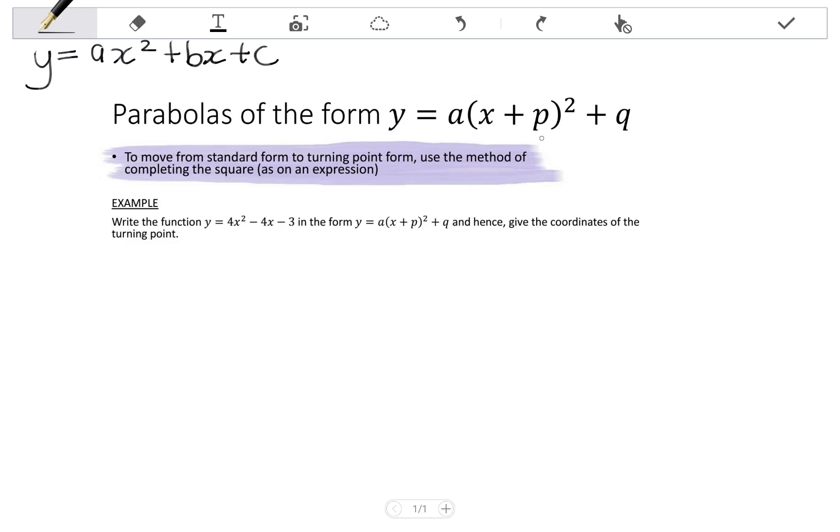To be able to take an equation written in standard form and write it in turning point form, we use the method of completing the square as on an expression. I say as on an expression as opposed to as on an equation because we have to keep the left-hand side y equals.